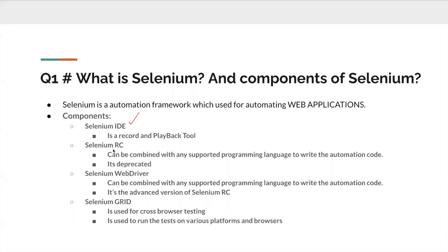Selenium RC is an outdated version. Now we have Selenium WebDriver which is the latest version. We are not going to use or learn Selenium RC because it is completely outdated. Selenium WebDriver can be combined with any supported programming language to write the automation code — such as Java, C Sharp, Ruby, Python, etc. — and then you can write the scripts. It is the advanced version of Selenium RC.